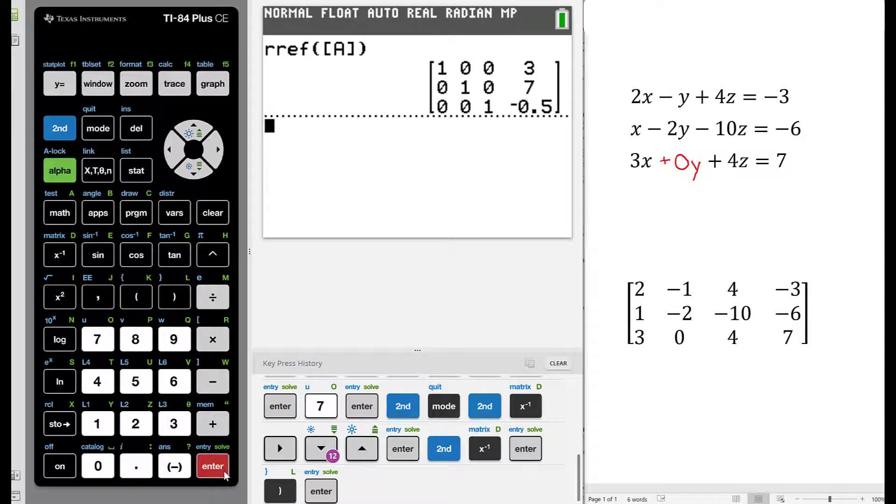In row 1, we have 1, 0, 0, 3. In row 2, we have 0, 1, 0, 7. And in row 3, we have 0, 0, 1, negative 0.5.